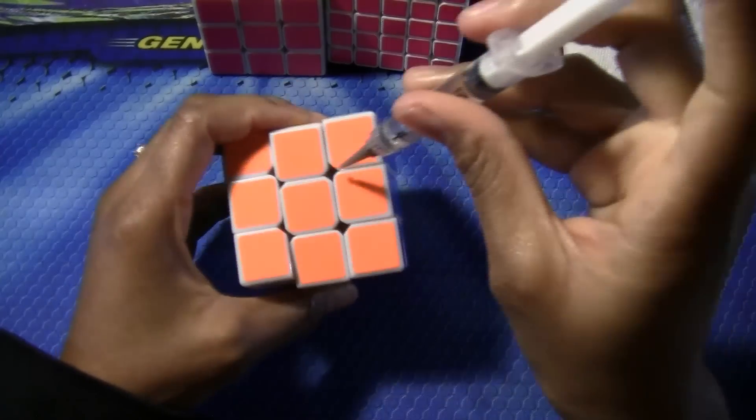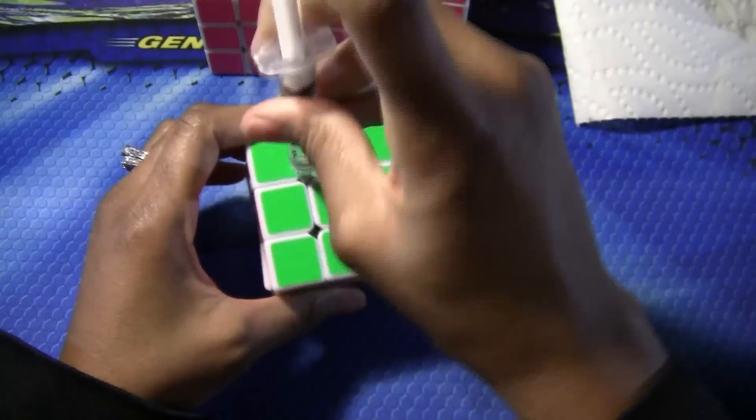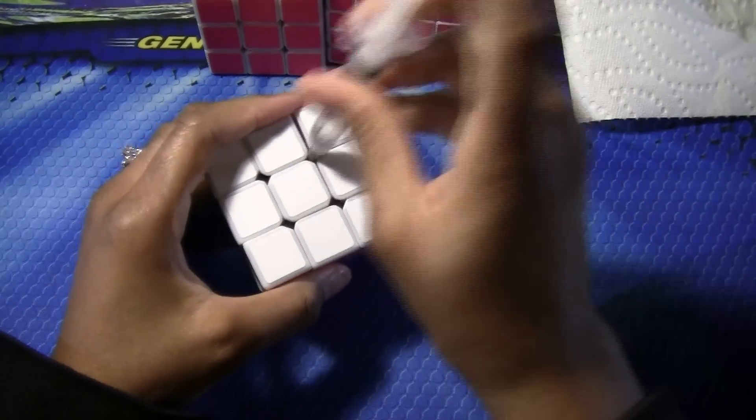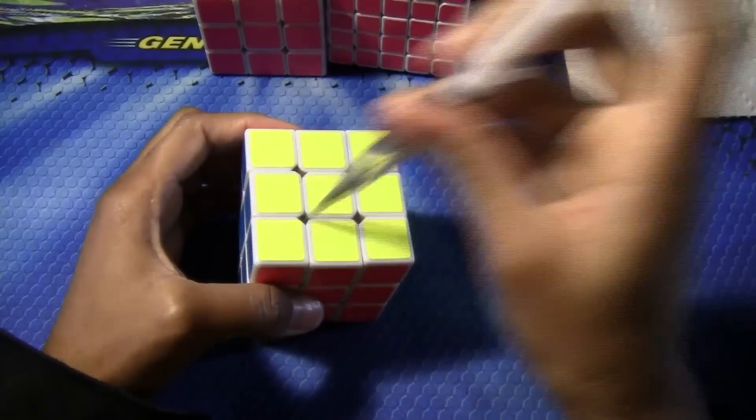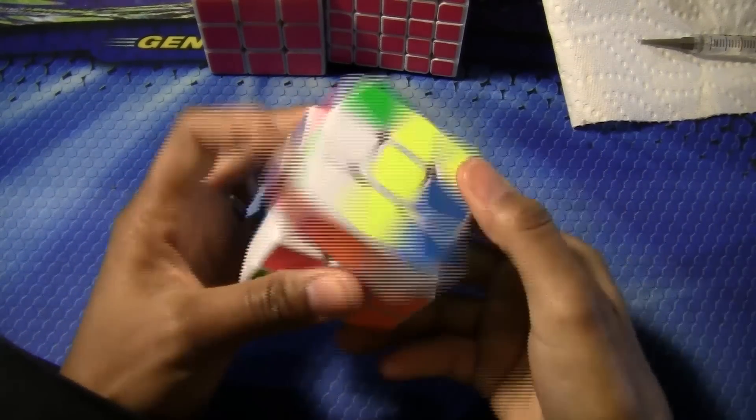Okay, so now that I have lube where the core is, I will just take this and pour it on orange, maybe a little on the green, a little on the blue, white, and a little on the yellow.